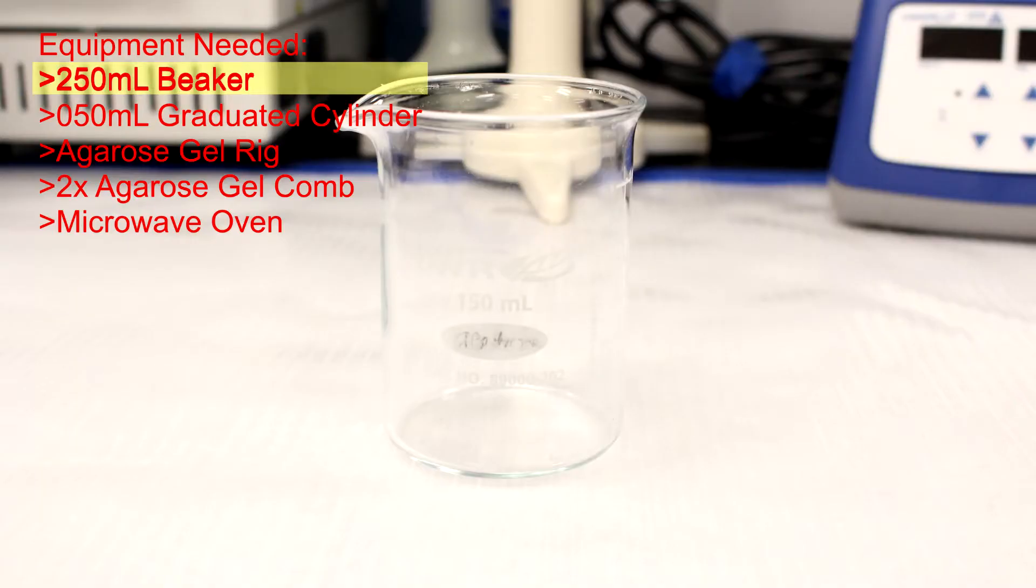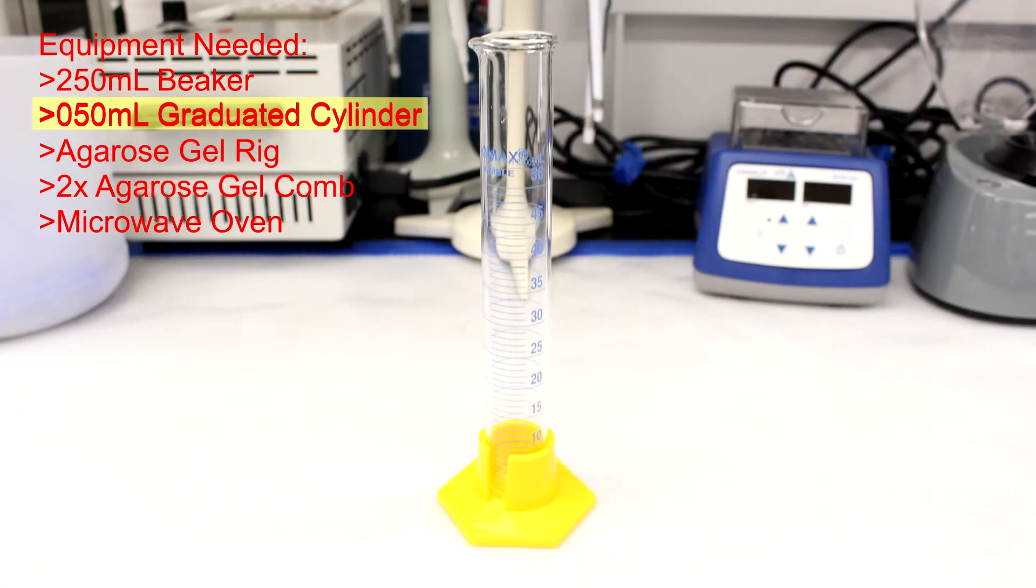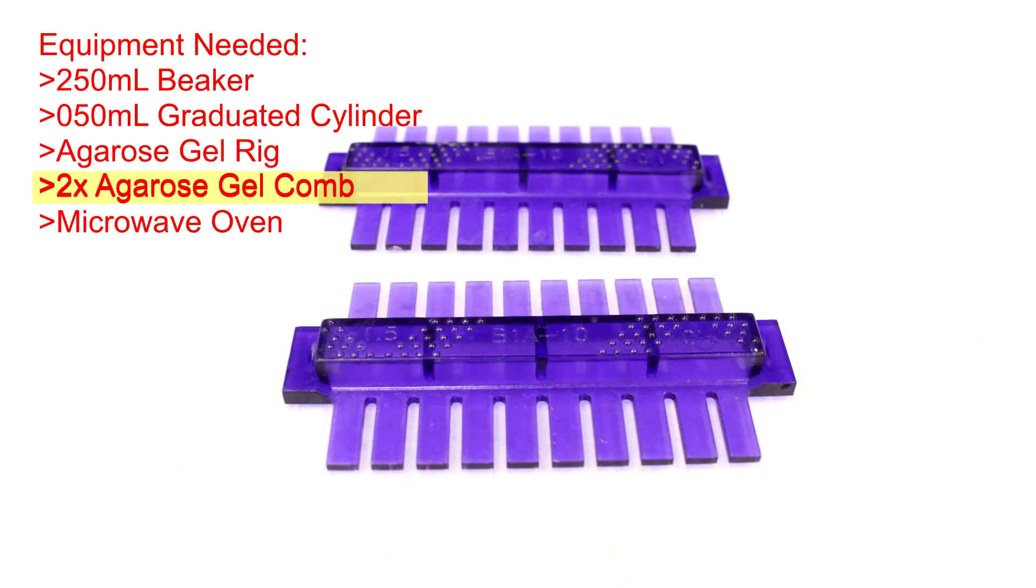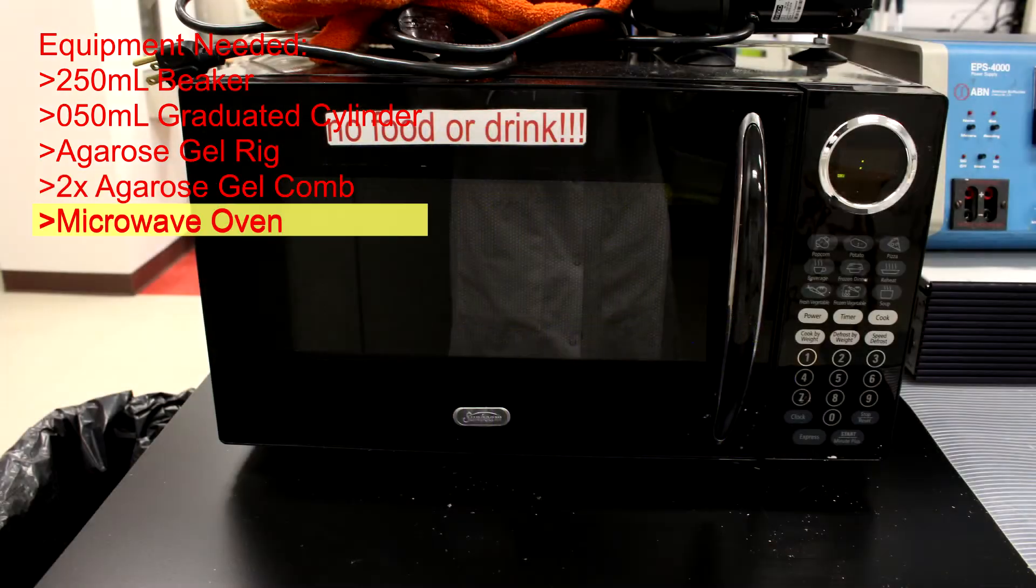The equipment required for this procedure are a 250 milliliter beaker, a 50 milliliter graduated cylinder, an agarose gel rig, 2 agarose gel combs, and a microwave oven.